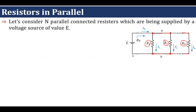We know that in a parallel connection the voltage across each element remains the same. So whatever voltage we measure across R1, the same voltage will appear across R2 or Rn. Since the voltage source is also connected in parallel with all these elements, the voltage V will be equal to E.